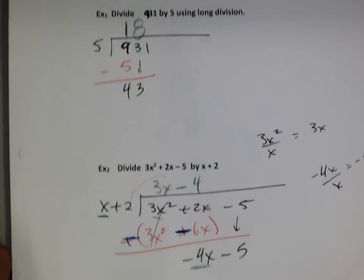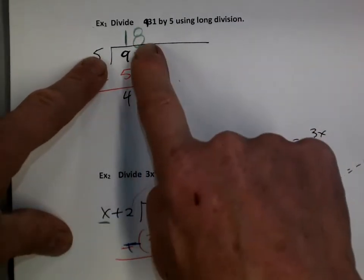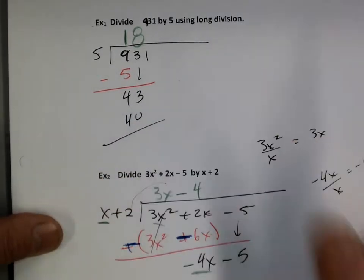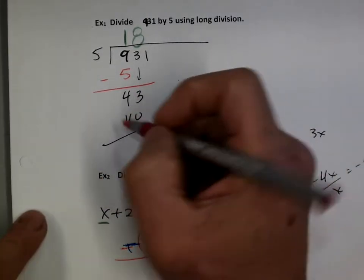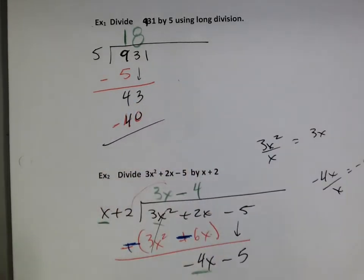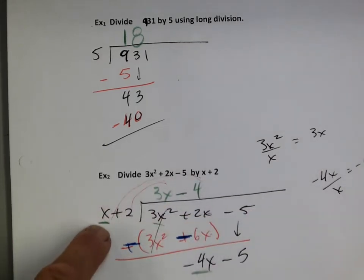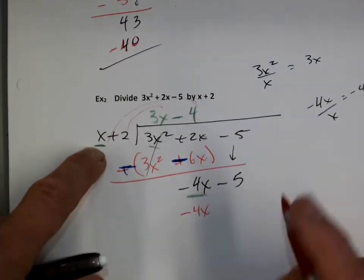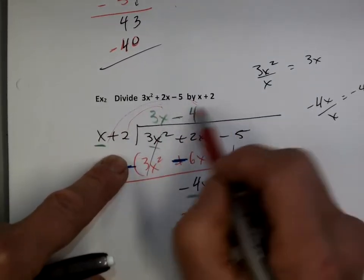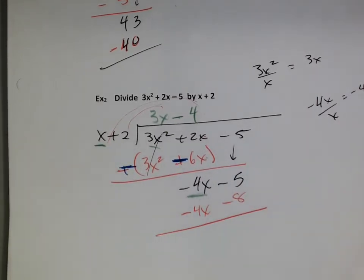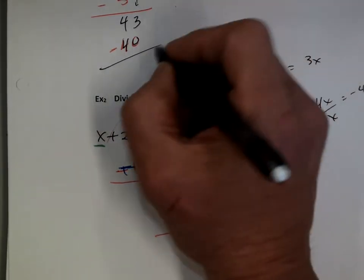What did you do up here? Well, you knew that 8 times 5 is 40 — so you put the 40 down here. And you subtract. Same process here — we're going to take the negative 4 times x and I'm going to get a negative 4x. And my negative 4 times 2 is a negative 8. So up above, if I subtract 43 from 40, I get a 3.